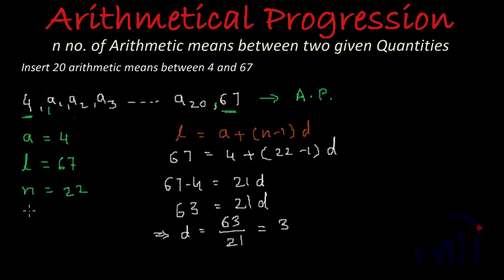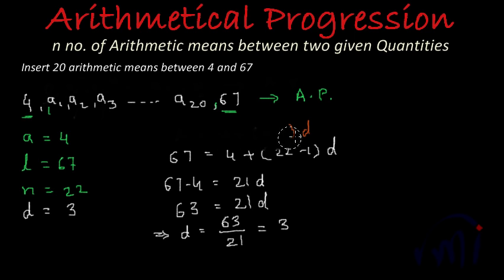From here we can find d equals 63 divided by 21, which equals 3. So we have found d equals 3, and now we can find these 20 terms easily. Let's erase this calculation which we have done to find the common difference.